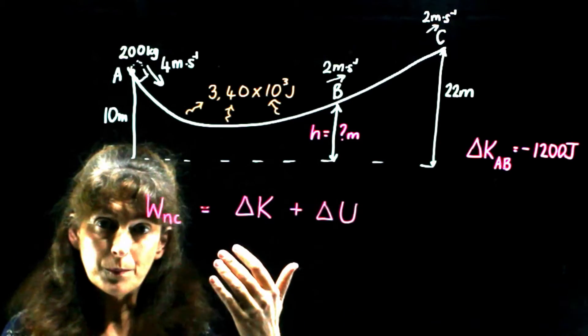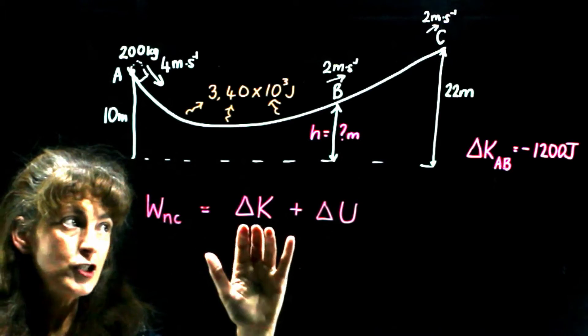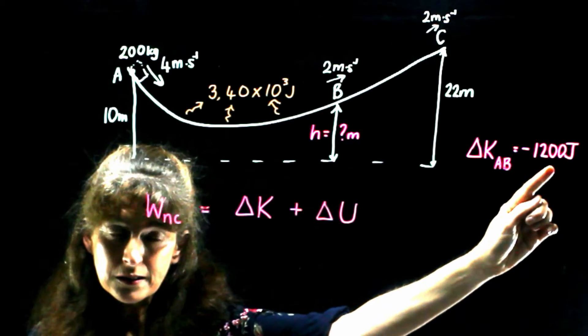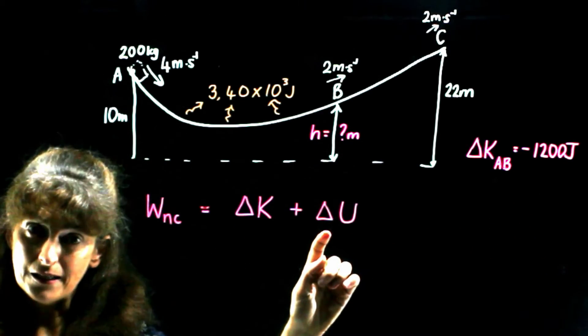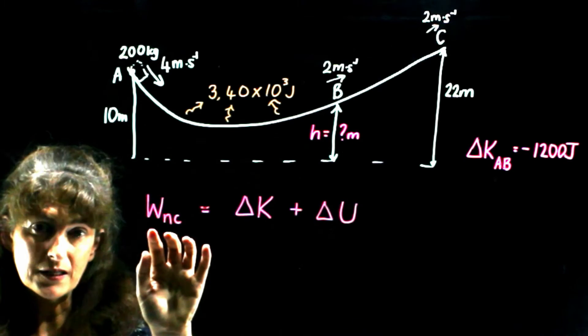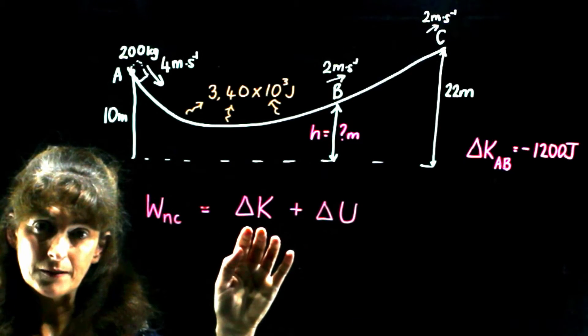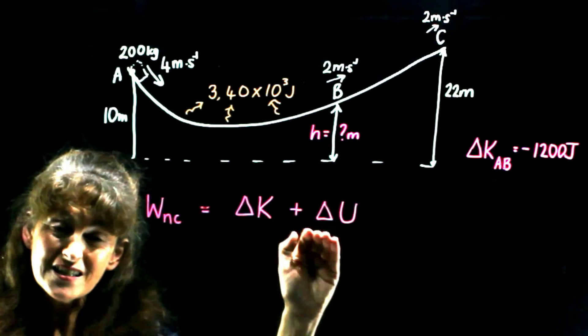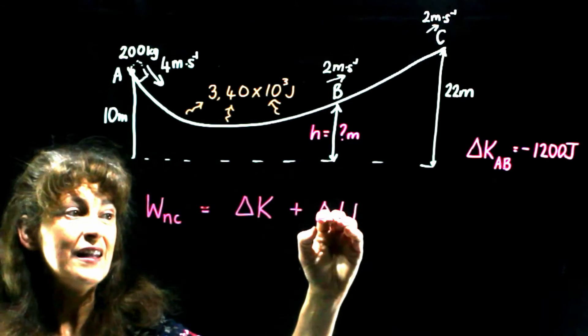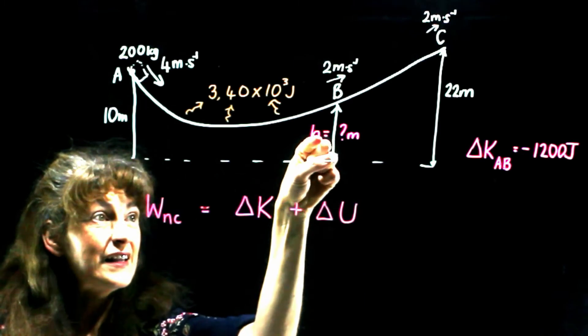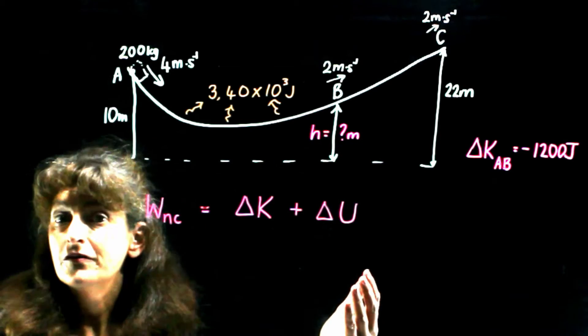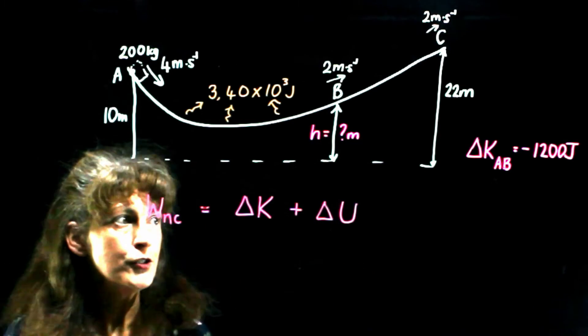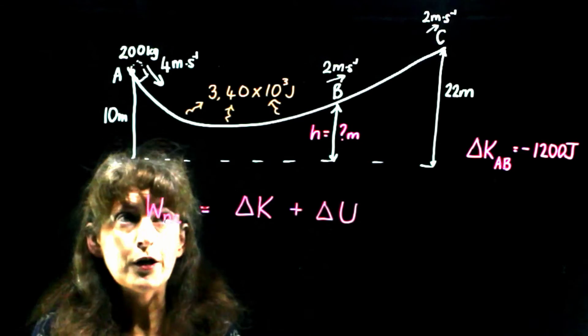In other words, the sum of the change in kinetic energy, which we've just worked out, and the change in gravitational potential energy. Now, we know this, we know this. And if we find this out, built into there is H. And so then we can find H out. So, let's substitute what we know.